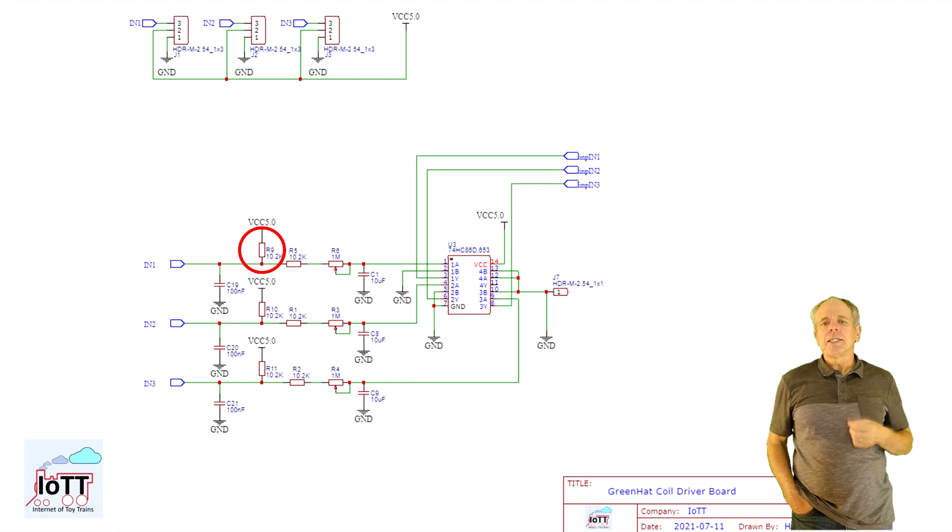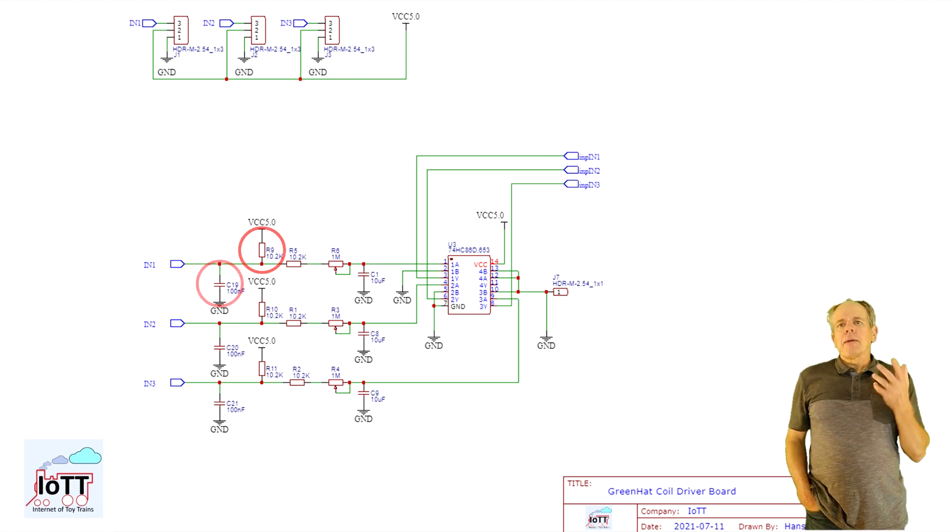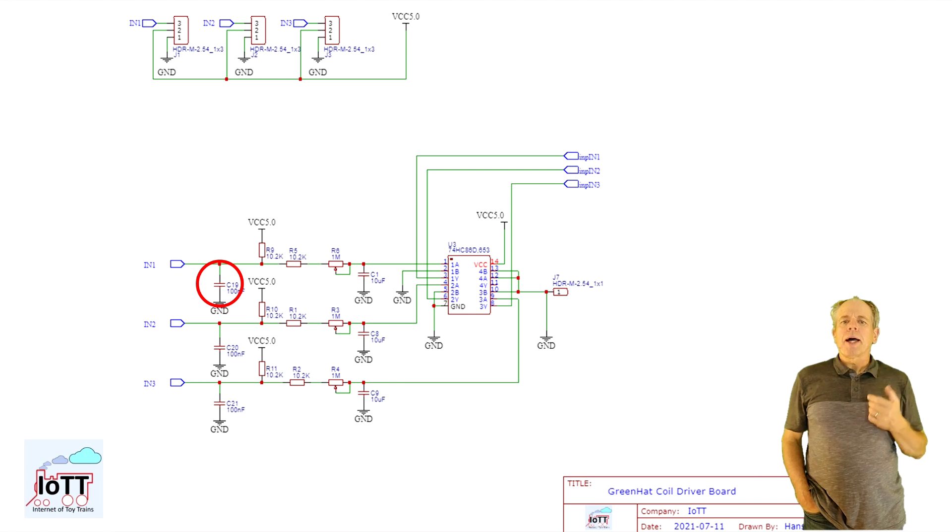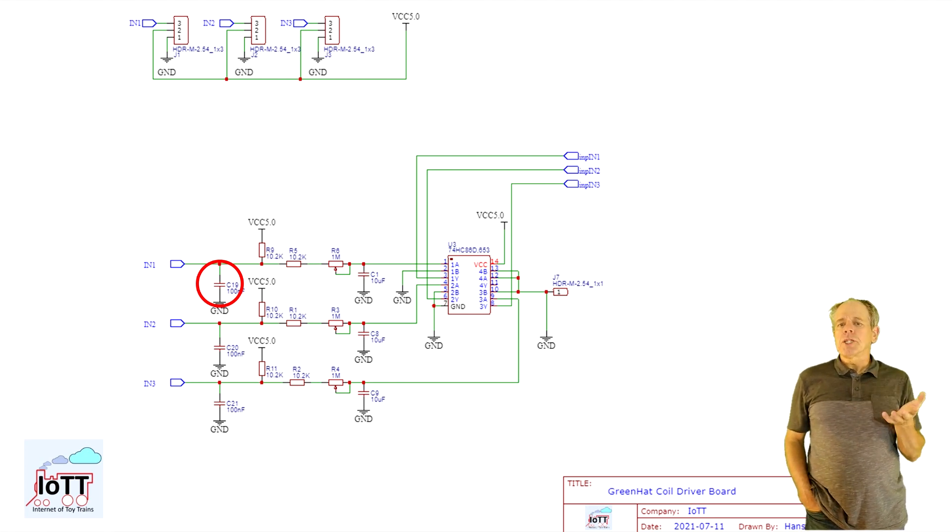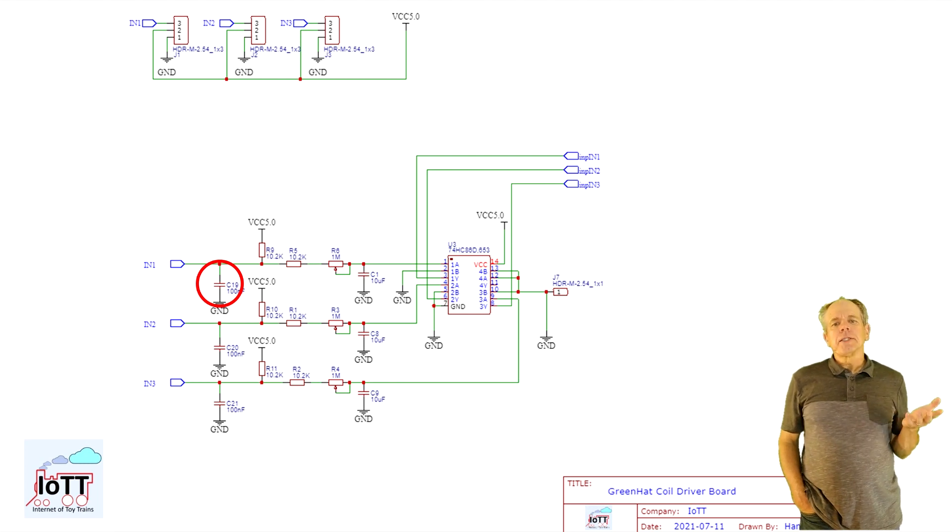The capacitor at the beginning is to filter out short spikes in the input signal. For example, bouncing of a switch or a relay. It is also needed for the PCA9685.